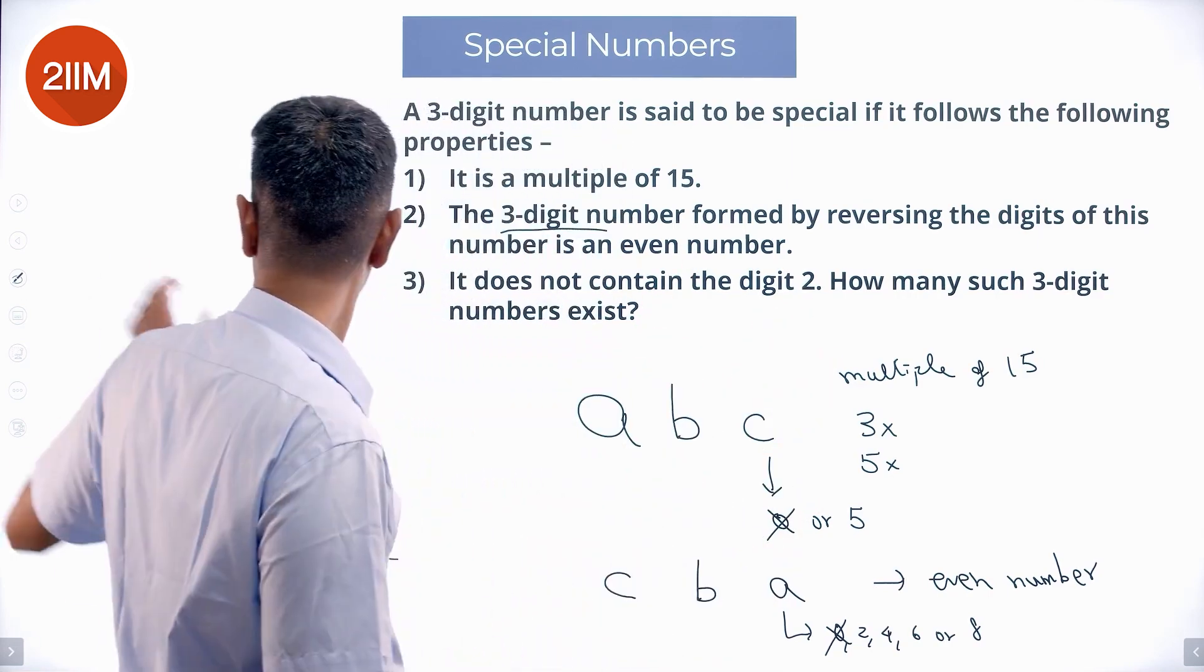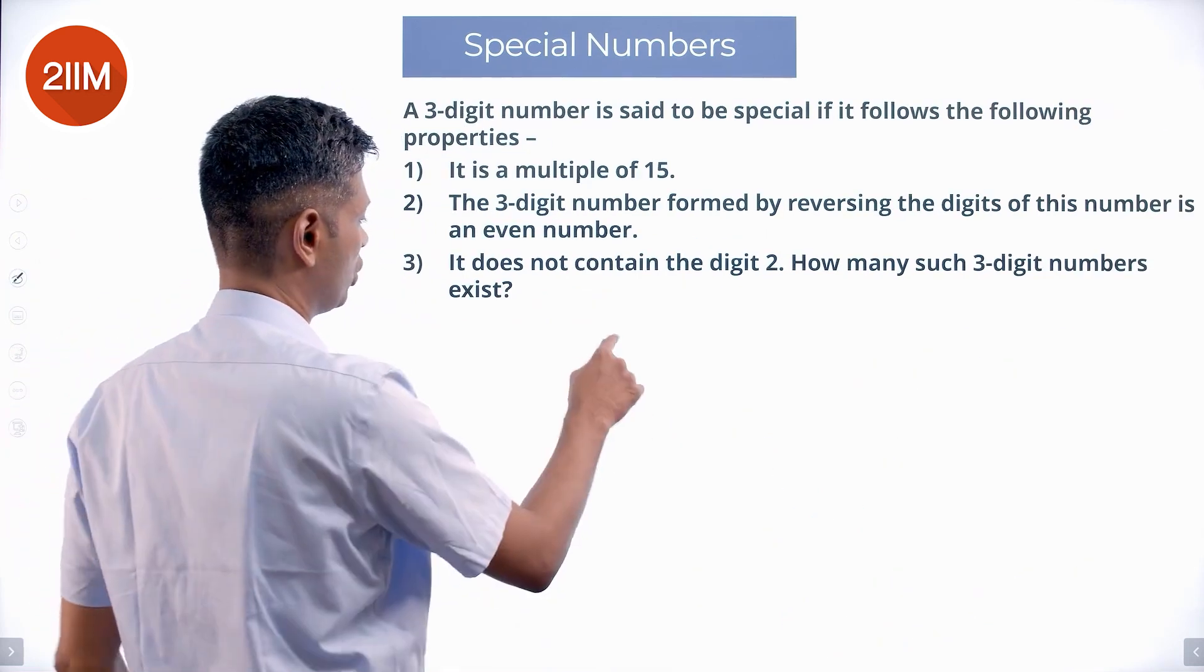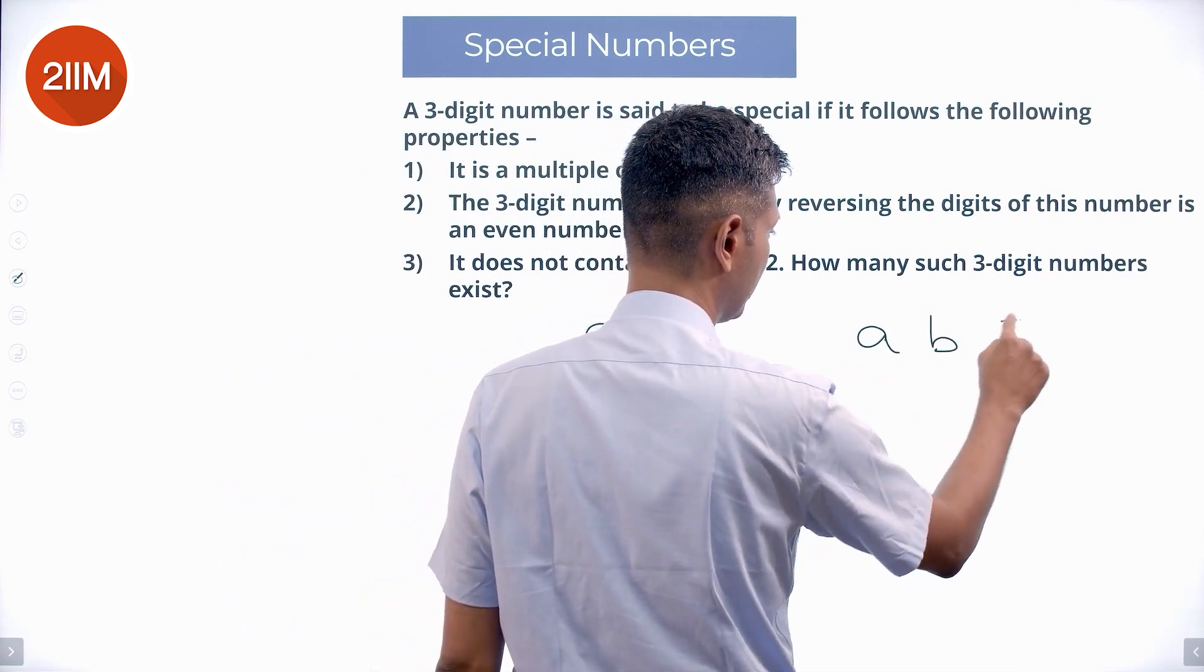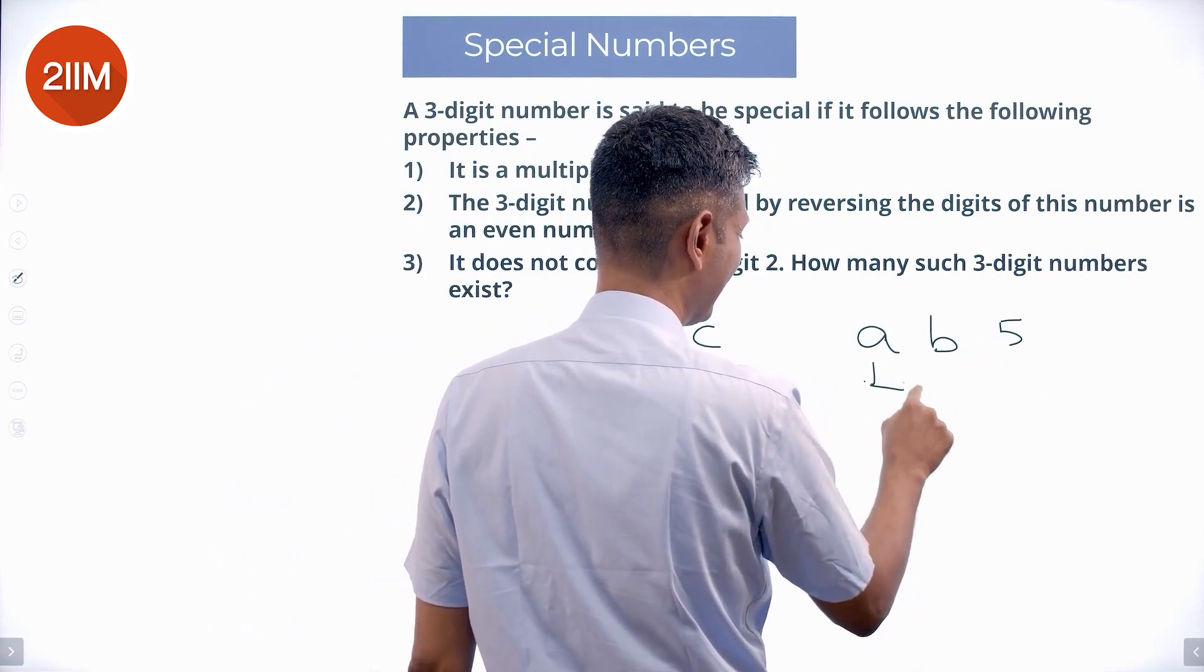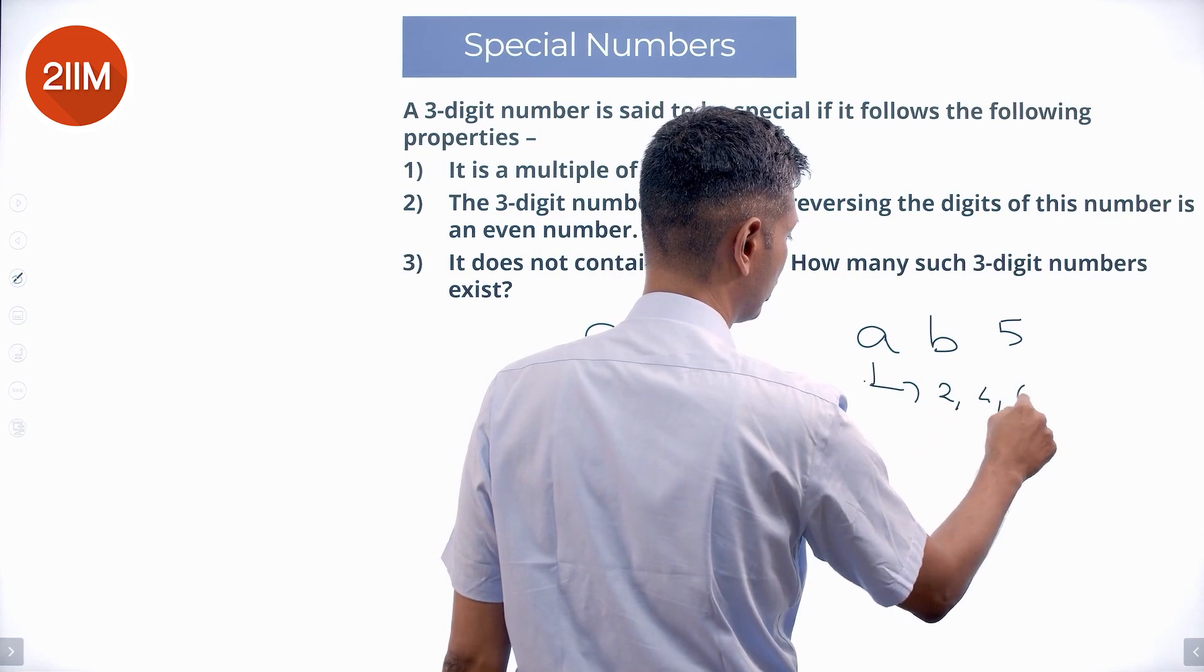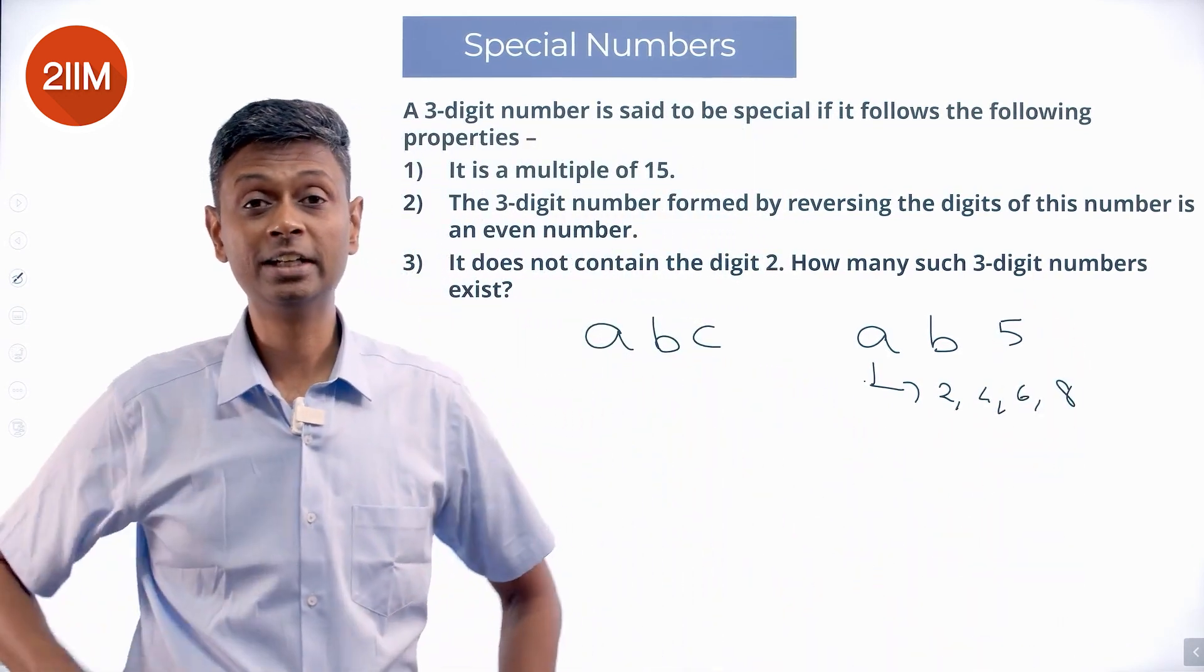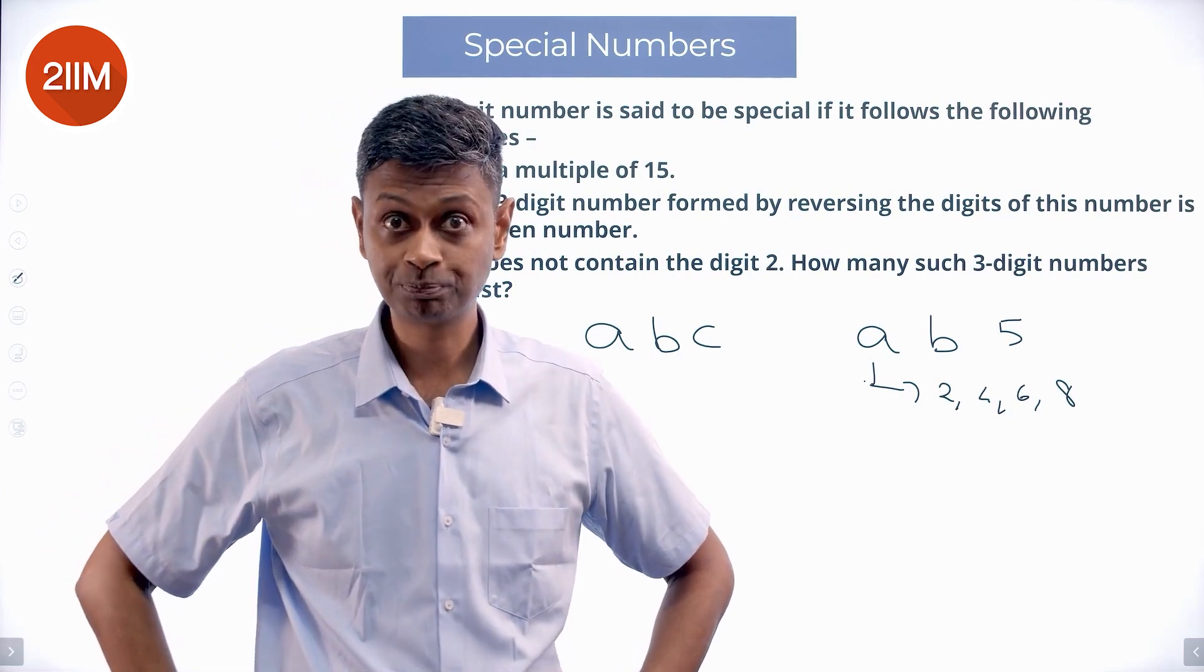So I am going to make sure we have that. We have 3-digit number A, B, C. I am going to write this as A, B, 5. I am going to say A can only be 2, 4, 6, or 8. The one condition we have not used so far is that this number is a multiple of 3.